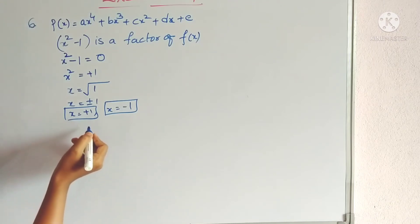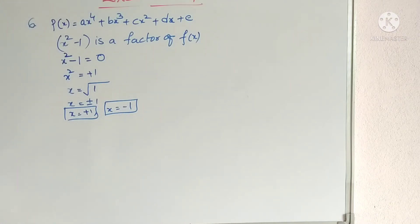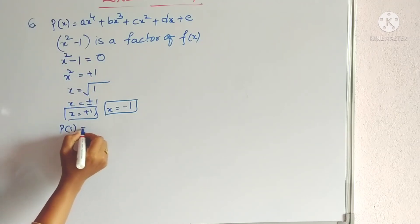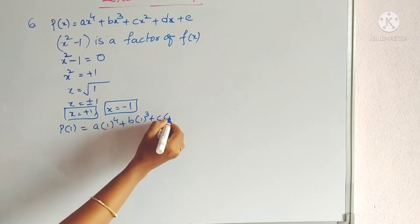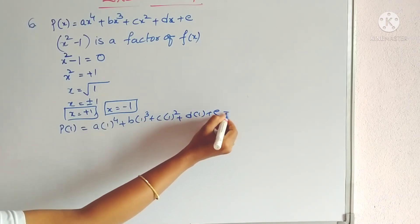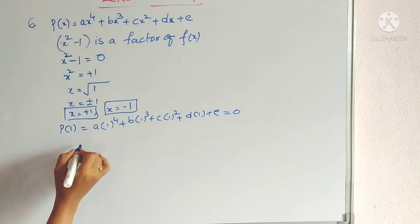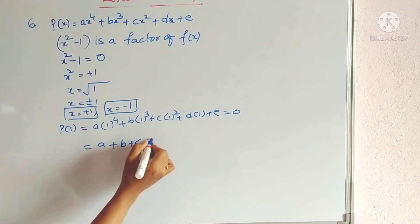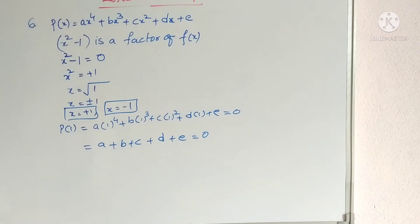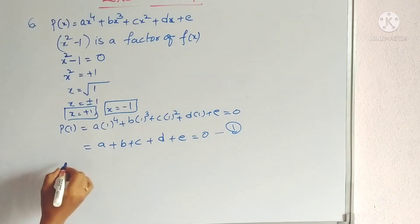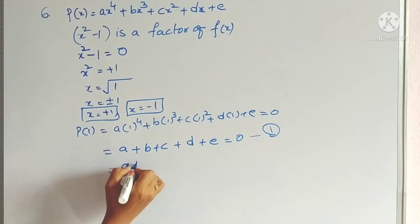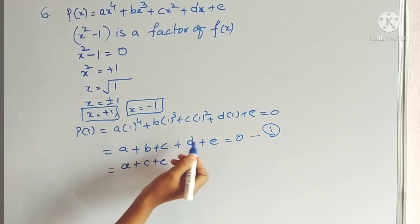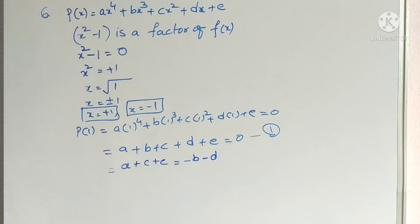We substitute +1 once and −1 once. For p(1): since it is a factor, the remainder is 0. Substituting x = 1 gives a + b + c + d + e = 0, so a + c + e = −b − d. Let this be equation 1.